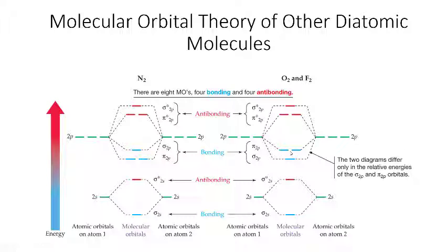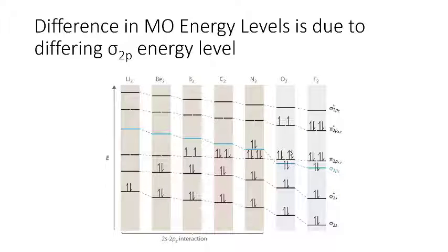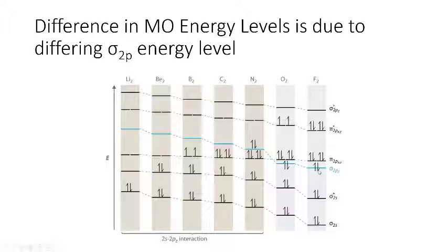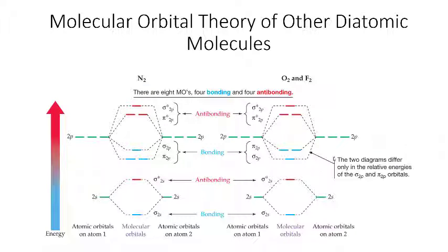That difference is just something to memorize: for N2, the sigma 2p is higher energy, while for O2 and F2, the sigma 2p is lower energy. The reasoning has to do with the energy level of the sigma bonding orbital from the 2p level — as we go from left to right across the periodic table for diatomic molecules, that sigma energy level drops lower. The exact reasoning would be covered in upper-level inorganic chemistry.